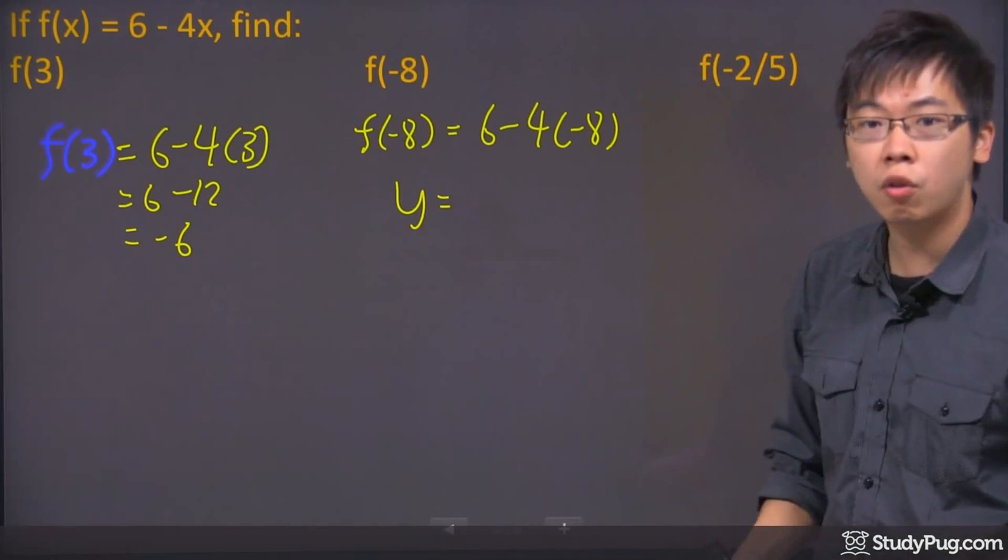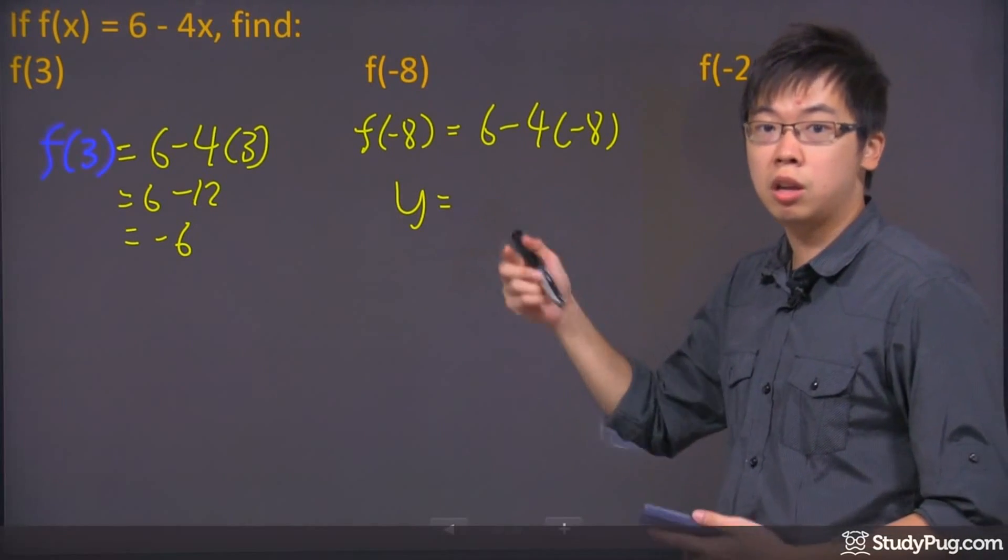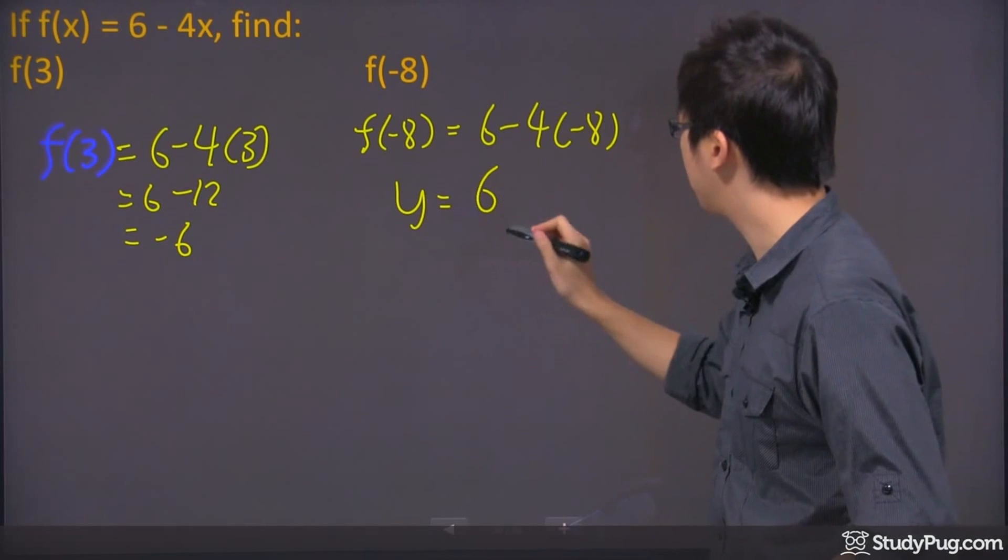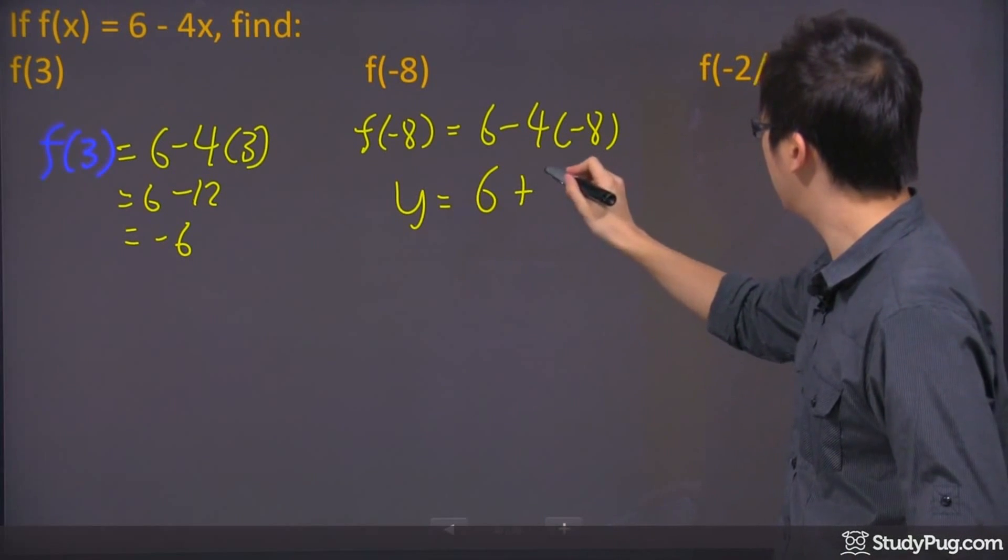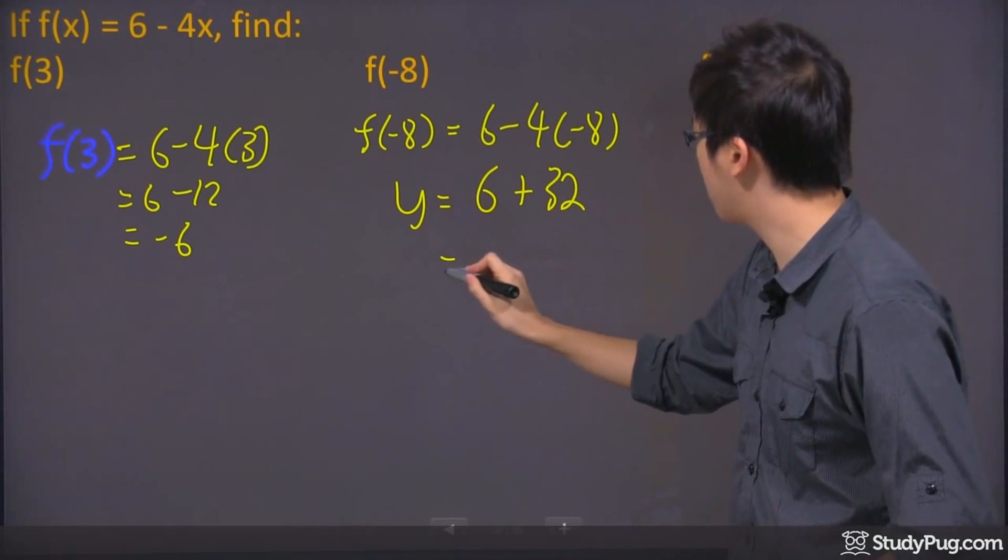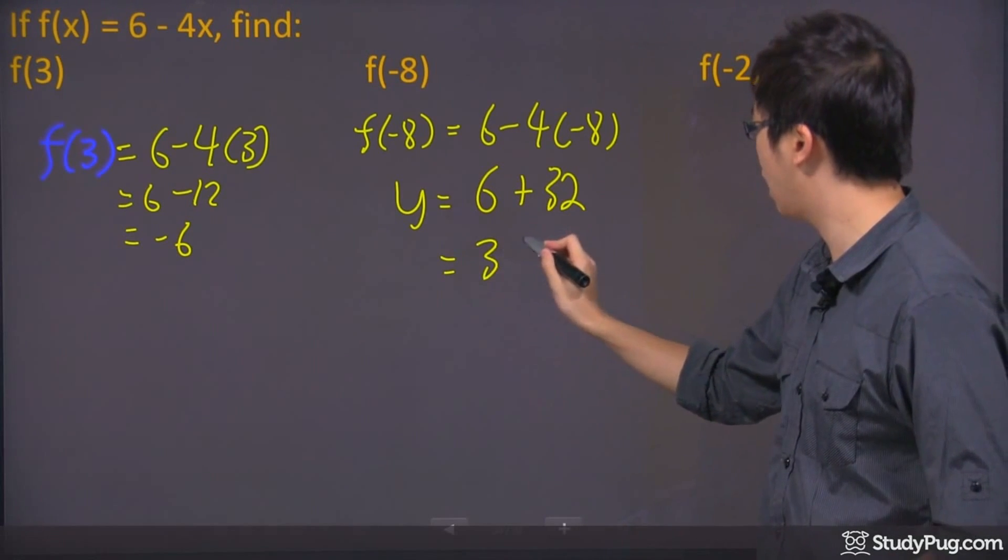So we got negative 8 and negative 4. And remember, negative times negative gives you a positive. Make sure you don't make those silly mistakes. So negative negative is positive. So we got 6 plus 32. And if you do the math, it gives you 38.